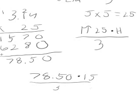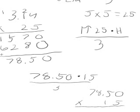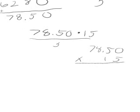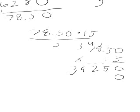First, we're going to do 78.50 times 15. Five times zero is zero, five times five is 25, carry the two. Five times eight is 40 plus two, so you get two, carry the four. Five times seven is 35 plus four equals 39, carry the three. Five times nothing is nothing plus three equals three. Then you do one times zero which is zero, one times five which is five, one times eight which is eight, and one times seven which is seven.